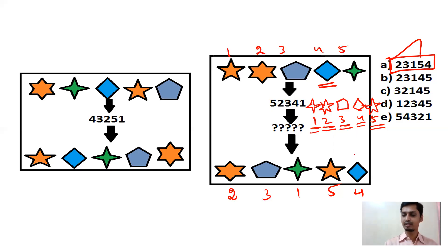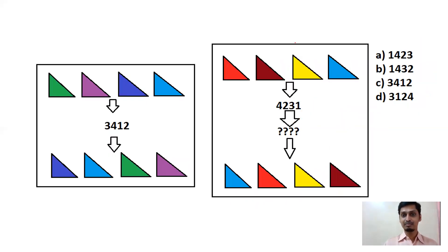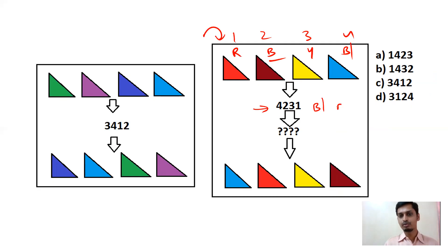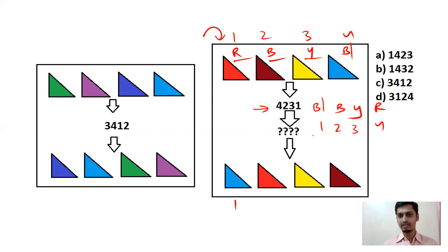Now the same symbols appear but with different colors, so take the colors instead of shapes. You have red (1), brown (2), yellow (3), blue (4). The arrangement is 4, 2, 3, 1: blue, brown, yellow, red. Write 1–4 over the output colors: blue is 1, red is 4, yellow is 3, brown is 2. Answer is 1, 4, 3, 2 — option B.